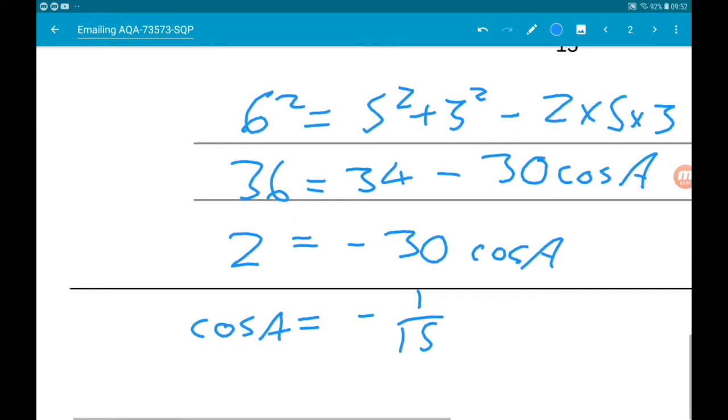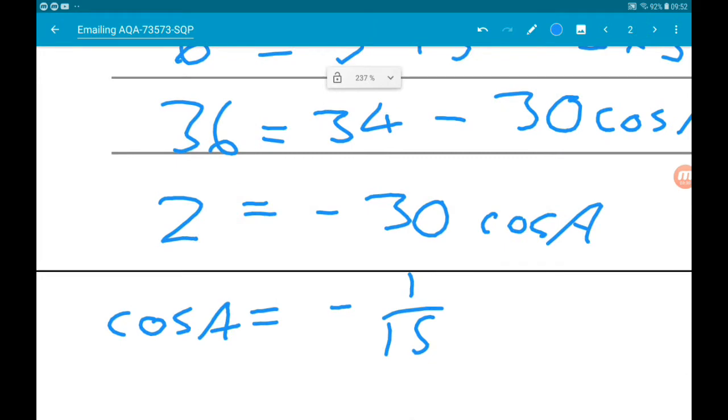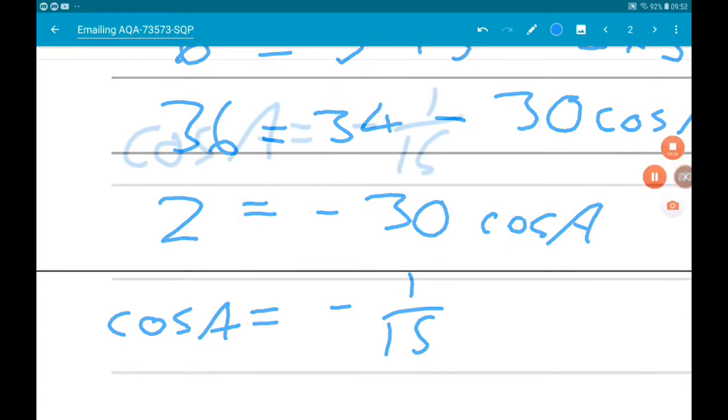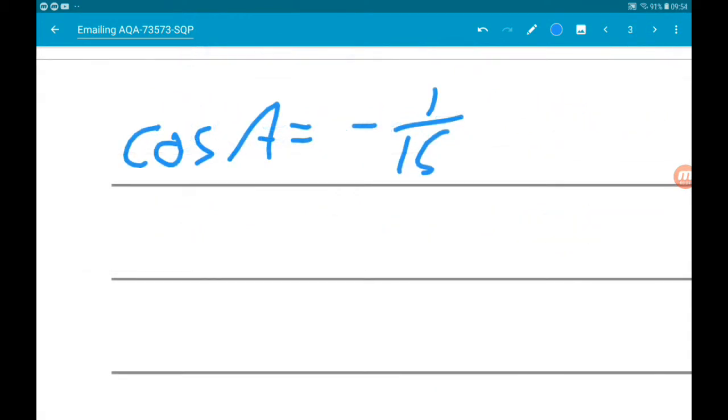Okay, so now what we're going to do is clear this up because I'm running out of room. Okay, so from here we got cos of A is minus 1 over 15.